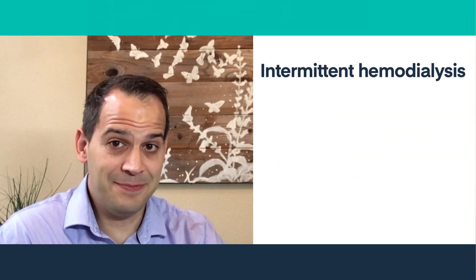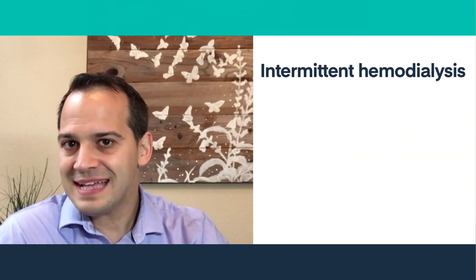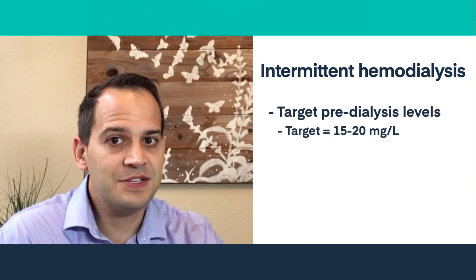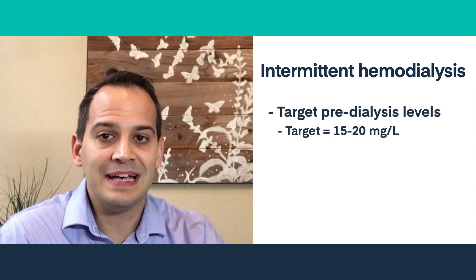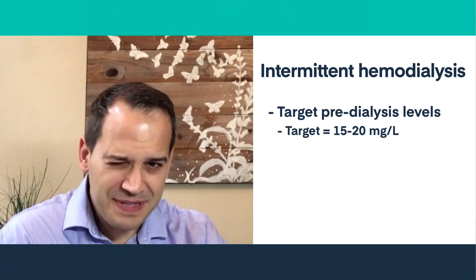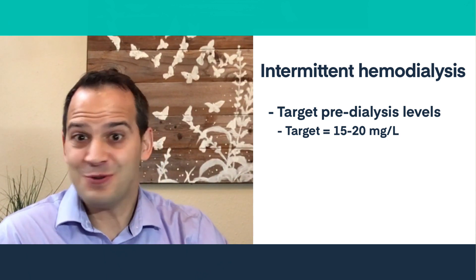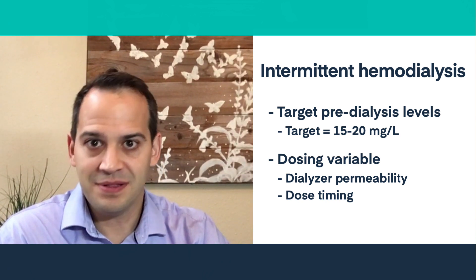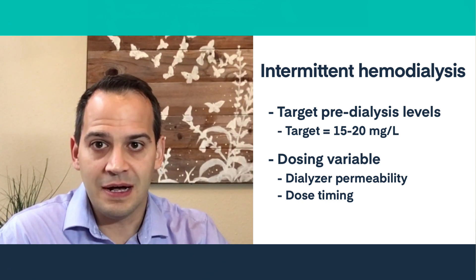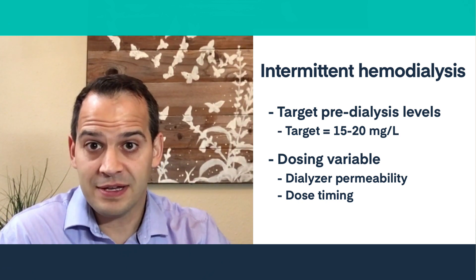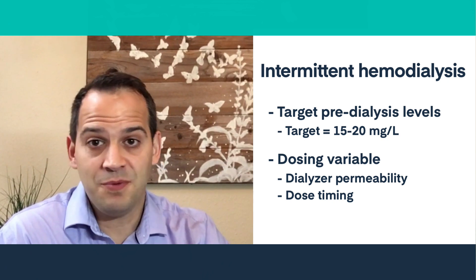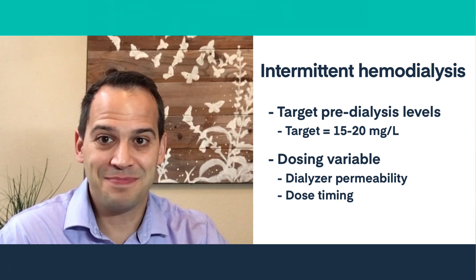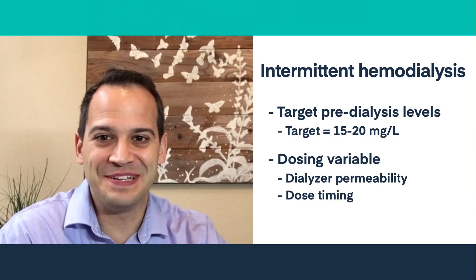Next up: intermittent hemodialysis. The guidelines discuss continuing to use pre-dialysis levels of 15 to 20 mg per liter as a target for AUC in this specific population. The dosing to get there is going to vary with the dialyzer permeability and the timing of doses. We have a blog post on the InsideRx website that includes a handy table with recommended loading and maintenance doses based on those factors, and the link is in the description box for this video.